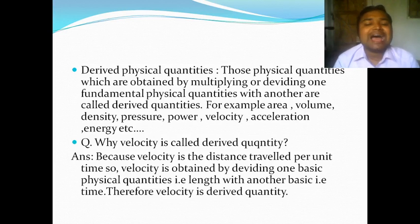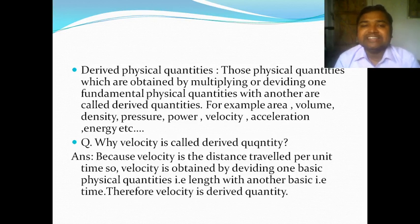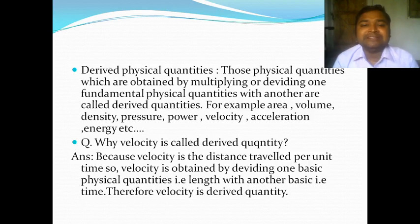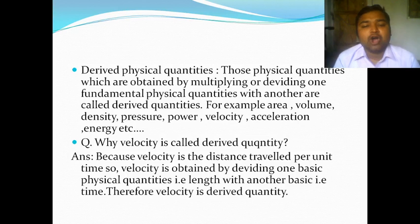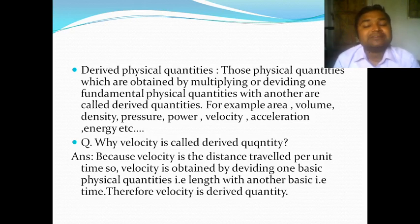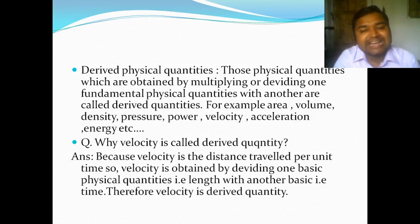Derived quantities depend on fundamental quantities. For example, why is velocity called a derived quantity? Velocity means the distance travelled per unit time — it is obtained by dividing two basic physical quantities: length and time. Therefore, velocity is a derived quantity because it depends on the fundamental quantities of length and time.